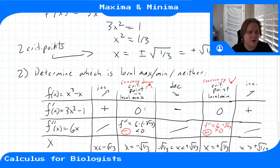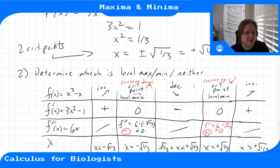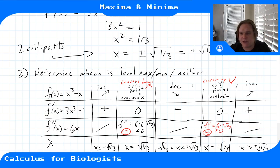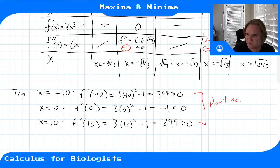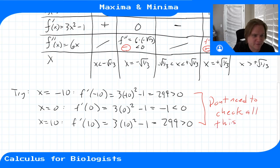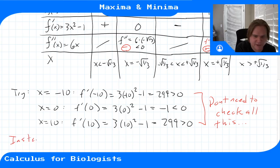Because the first derivative is zero, we're at the tip of a concave bowl. We just need to know if the bowl is pointing up or down: pointing down means a max, pointing up means a min. So we don't need to do all the first-derivative analysis. Instead, we can use the second derivative test.